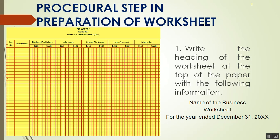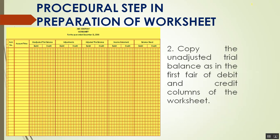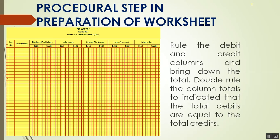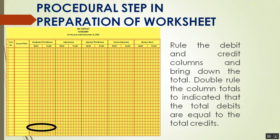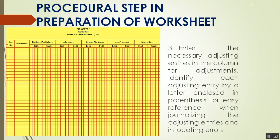Here is the summary: write the heading of the worksheet at the top of the paper with the following information — name of the business, 'Worksheet,' and 'For the Year Ended December 31' with the applicable year. Next, copy the unadjusted trial balance as the first pair of debit and credit columns of the worksheet. Total the debit and credit columns and bring down the total to confirm that total debits equal total credits.